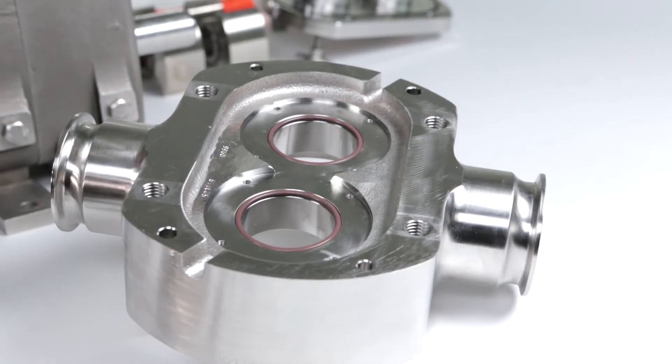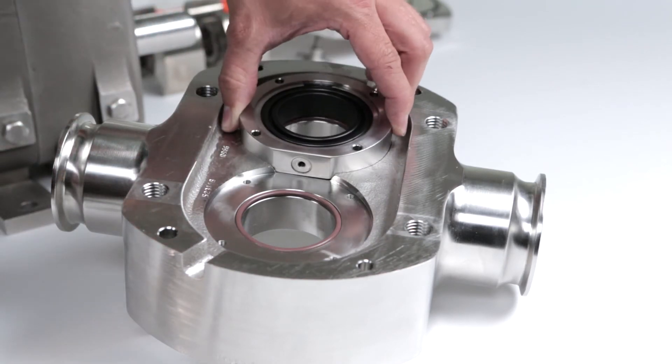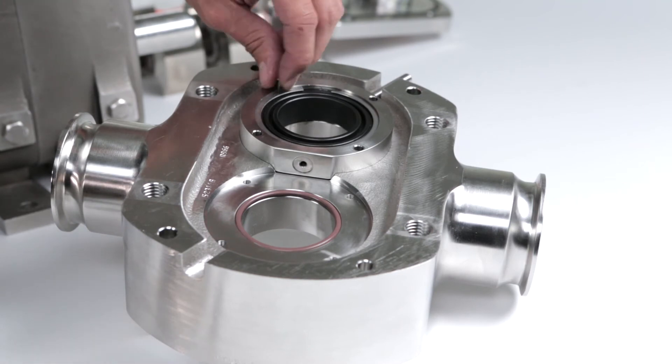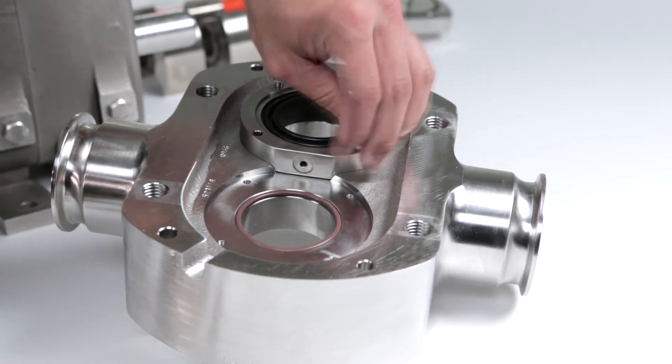Install one of the seal cartridges onto the pump housing with the flat side toward the middle. Insert the seal housing screws through the hole in the seal cartridge and finger tighten.